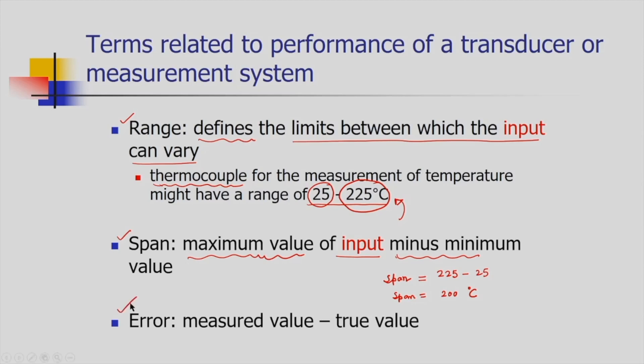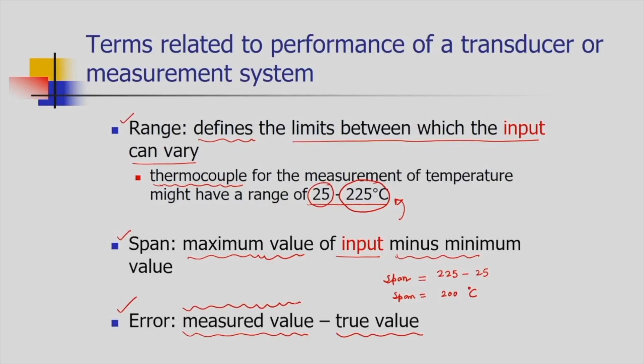The third term is error — the difference between the measured value and the true value. Sensors are designed, manufactured in a laboratory, and calibrated, and based on that calibration the true or expected values are determined. When the same sensors are used in actual practice, they may not give the exact desired result. The value measured during application may differ from the true or expected value, and that difference is called the error.